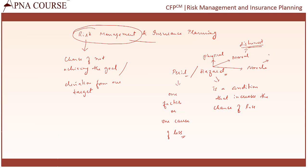The third type is morale hazard. Morale hazard is more to do with an individual's negligence. The person is completely indifferent to both outcomes — negligent enough not to act upon a particular task — and hence it increases the risk of loss. So the three types of hazards are: physical hazard, moral hazard (where the person is knowingly dishonest), and morale hazard (which occurs due to a person's negligence).